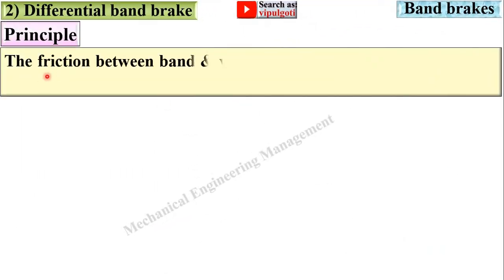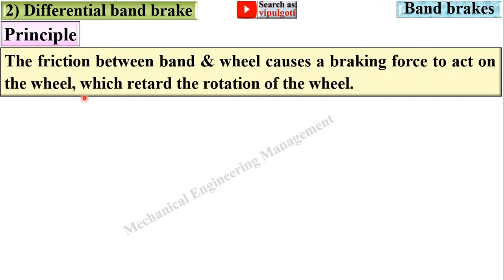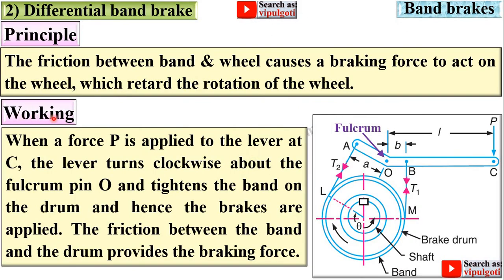Principle: the friction between the band and wheel causes a braking force to act on the wheel, which retards the rotation of the wheel. Working: when a force P is applied to the lever at C, the lever turns clockwise about the fulcrum pin O and tightens the band on the drum, and hence the brakes are applied. The friction between the band and the drum provides the braking force.